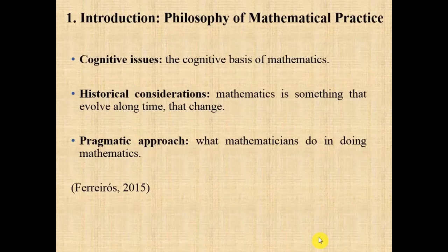The philosophy of mathematical practice is a recent framework in the philosophy of mathematics studies proposing three characteristics of mathematics: the cognitive, the historical, and the pragmatic aspects. The cognitive aspects concern the cognitive basis of mathematics and specifically the cognitive roots of geometric knowledge. The historical aspect refers to the fact that mathematics evolves in time and changes, and the pragmatic approach refers to what mathematicians do in doing mathematics.